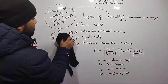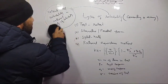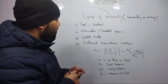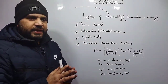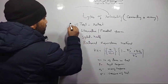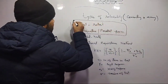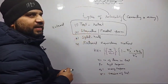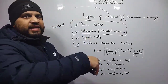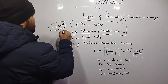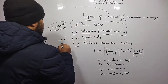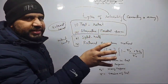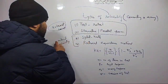Now let's quickly move to types of reliability. There are 4 types. If we group them: two of them are external consistency methods and two are internal consistency methods. So test-retest is an external consistency test, and split-half method is an internal consistency test. In external consistency we use test-retest and alternate parallel form. In internal consistency we use split-half method and rational equivalence method.